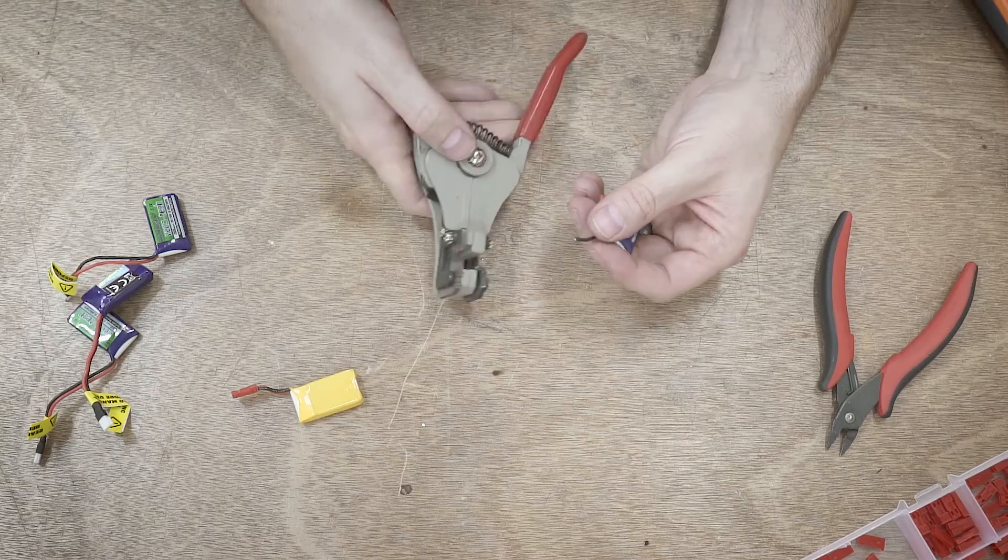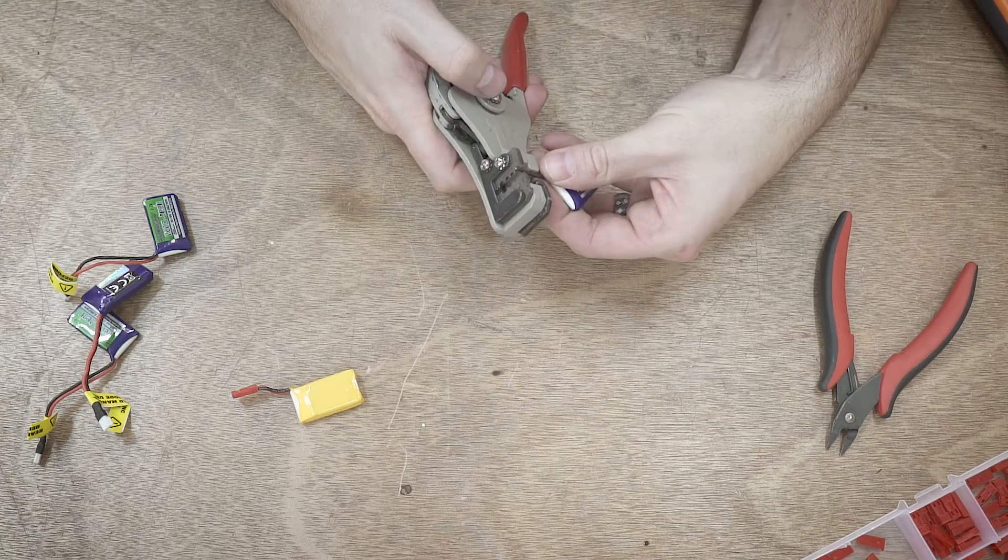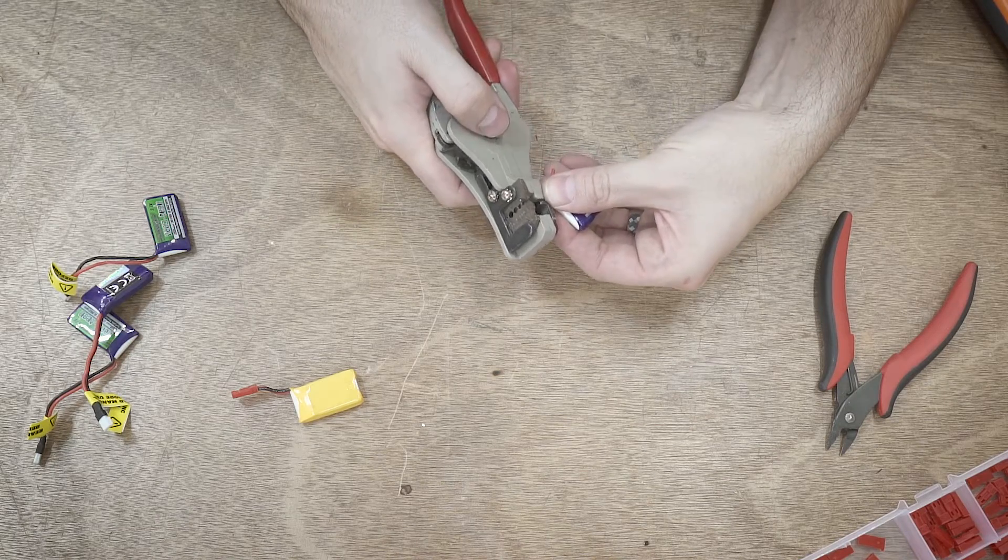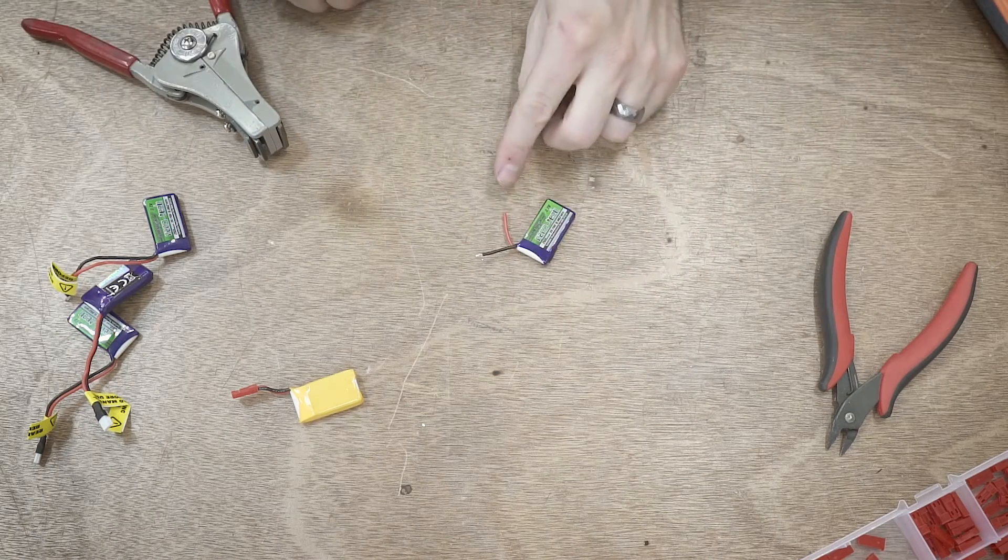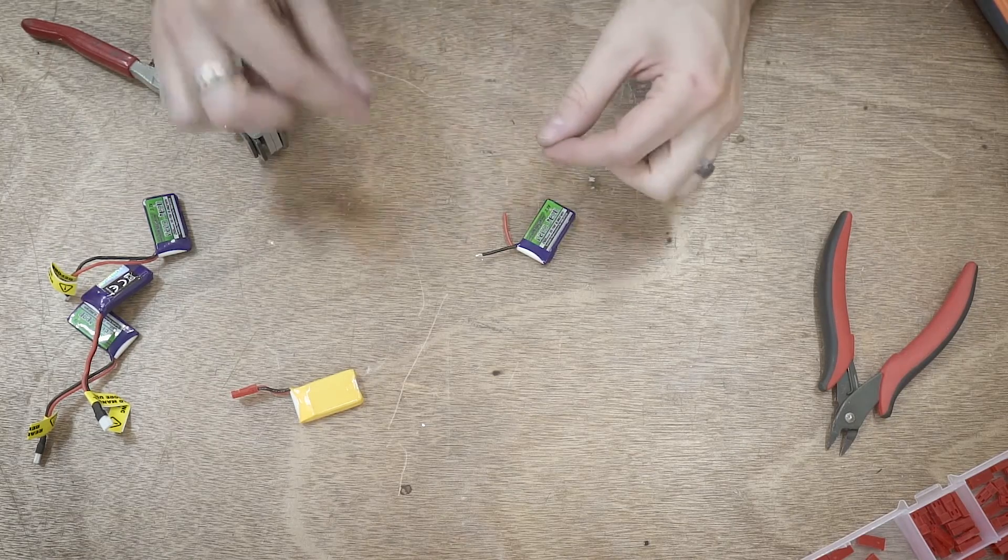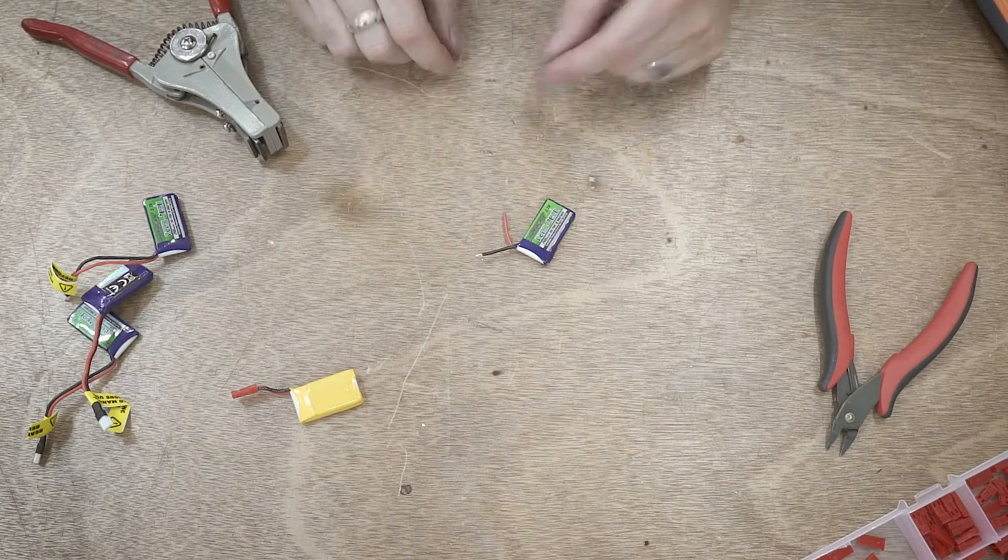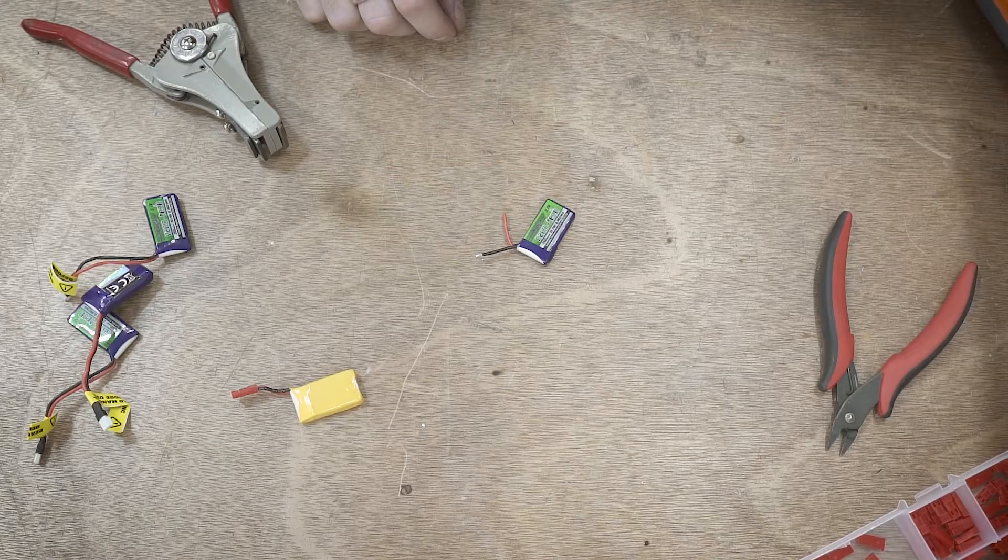I'm using my wire strippers and I'm just going to strip off maybe just a couple millimeters at the end. Notice I only strip one and then I'm going to terminate this, put it in the housing and then move on to the other one. So I'm not going to terminate them both at the same time because that could cause some issues.